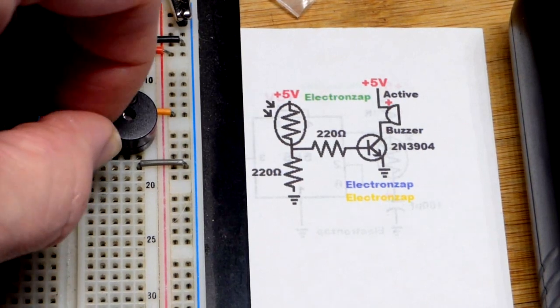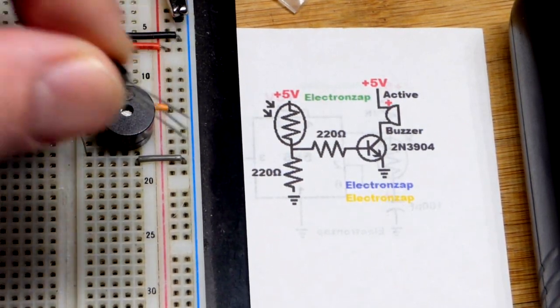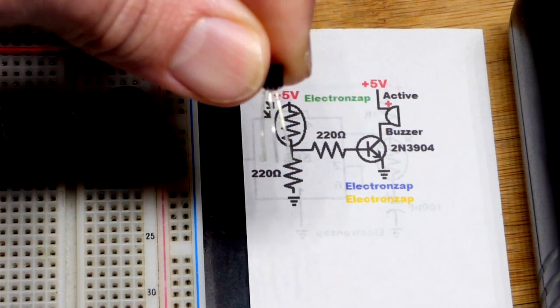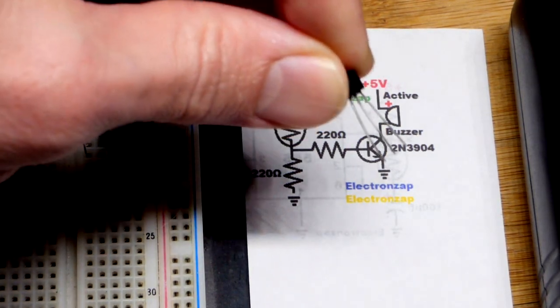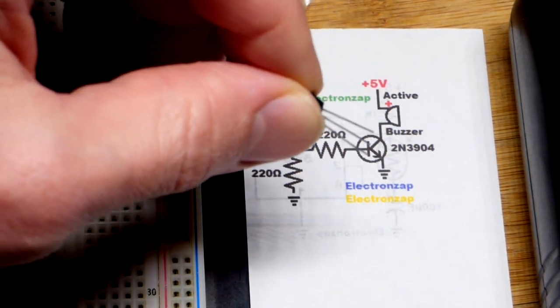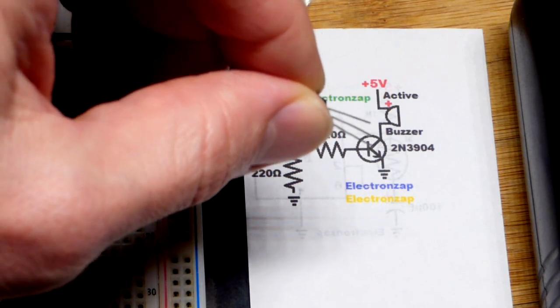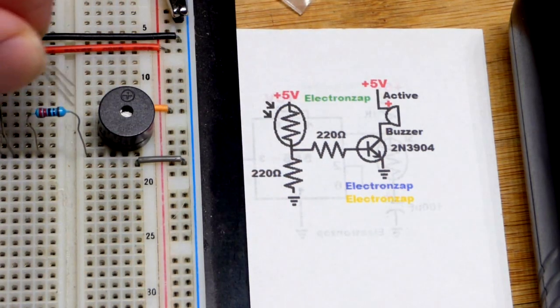We have the transistor here. You should be able to see how it was wired pretty easily. But we're looking at the flat side. Left is the emitter right there. And the middle is the base. And then the right is the collector. That's the way it goes right there.